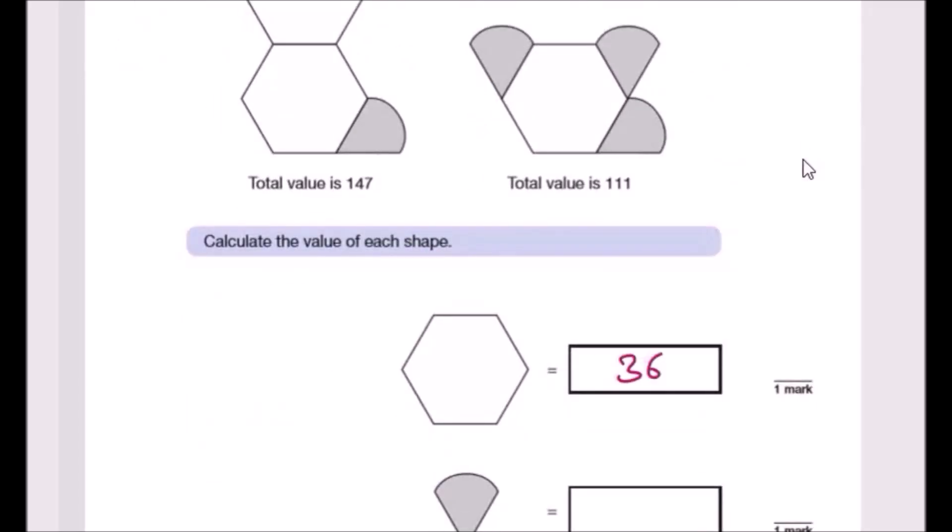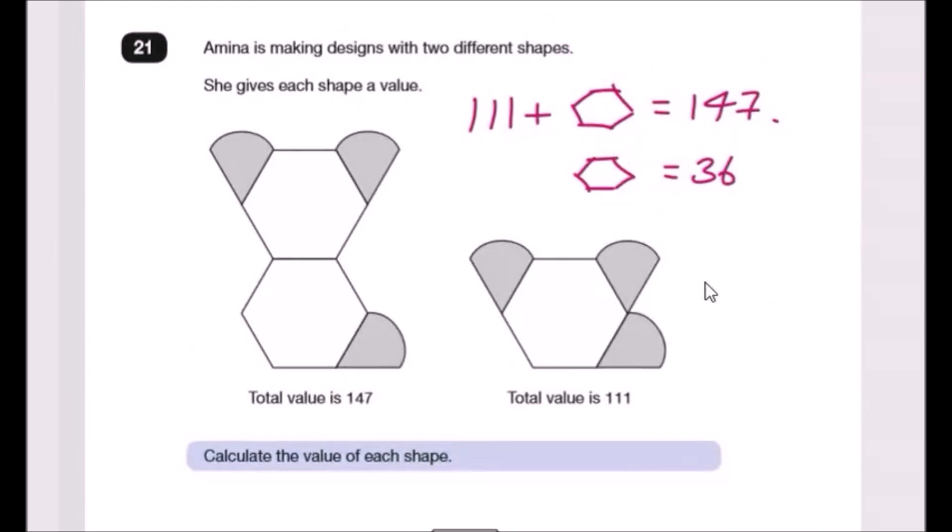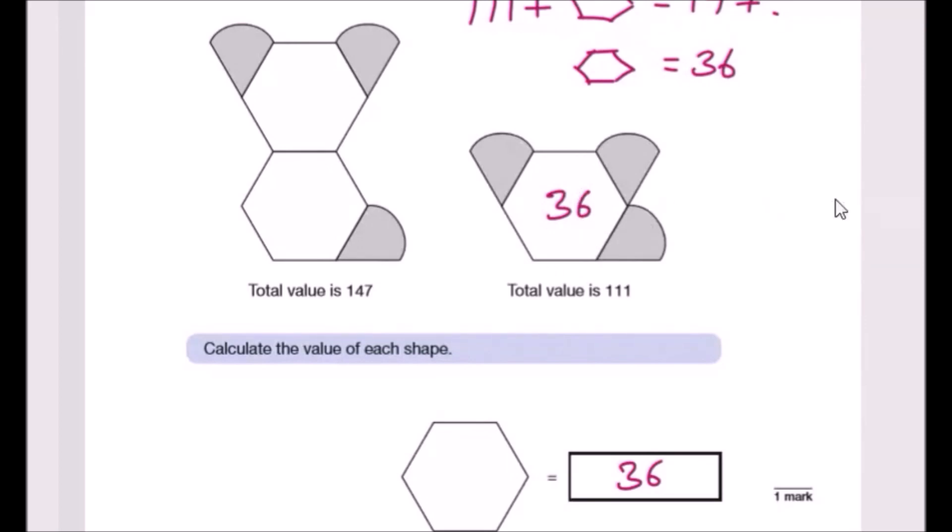That's this one done. Now to get the triangle, since we know the hexagon is 36, we can say that these two triangles are of course the same values. Let's just firstly knock out the hexagon, so we're left with three of these ice cream cones. If you subtract 36 from 111, what should you get?